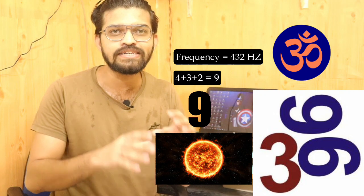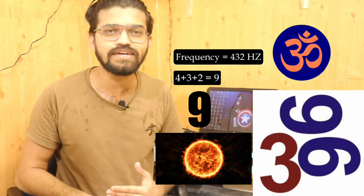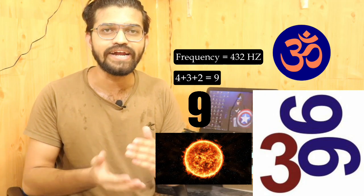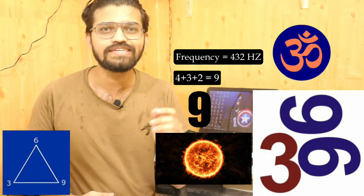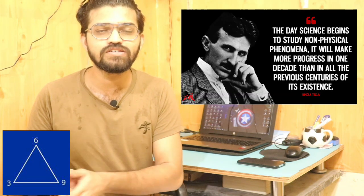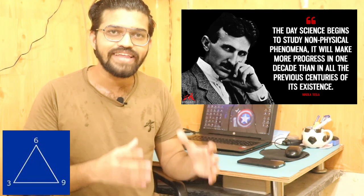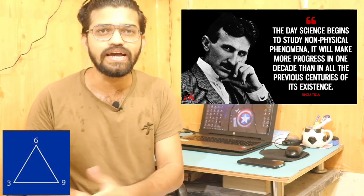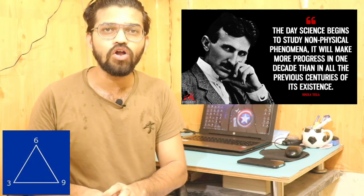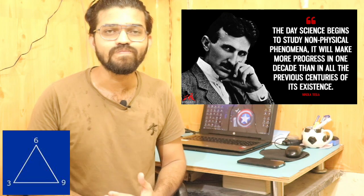We can say that the 369 theory is hidden in our universe, which is why Tesla followed it and did everything in sets of 3, 6, and 9. These three numbers carry higher importance. As Tesla said, the day science begins to study non-physical phenomena such as energy, frequency, and vibrations, science will make more progress in one decade than in all of its previous years of existence.